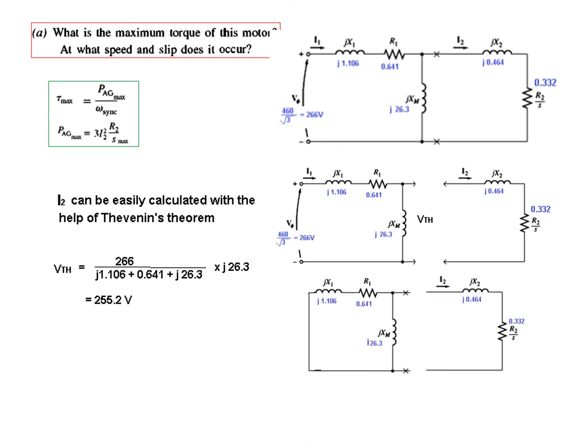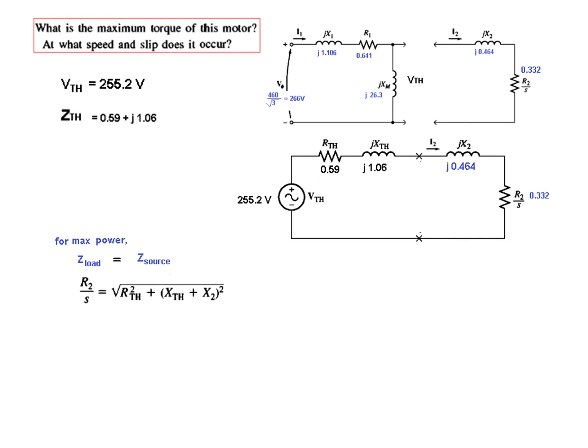Now we need to find Z_Thevenin. For Z_Thevenin we short circuit the source and these two are in parallel. Solving this parallel, the answer is 0.59 + j1.06. The real part is R_Thevenin and the imaginary part is X_Thevenin. So this is our Thevenin circuit now with the values plugged in.